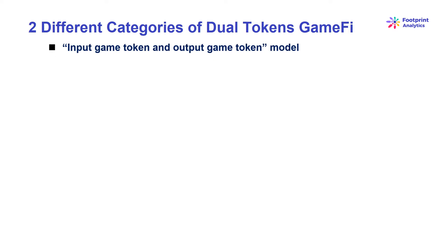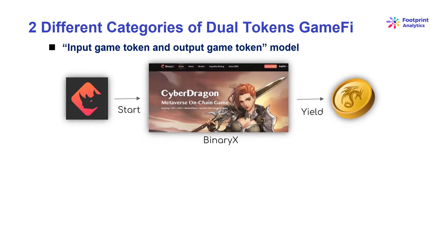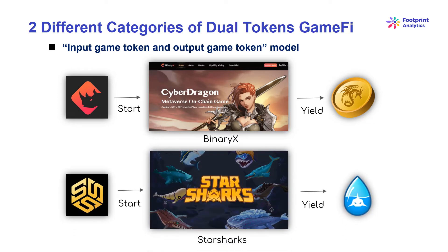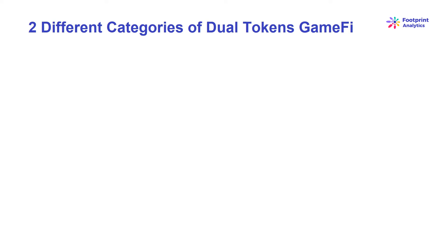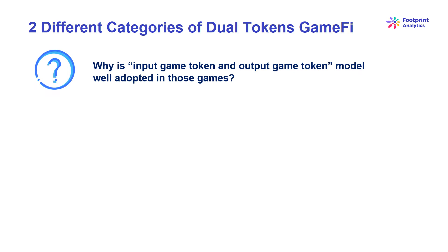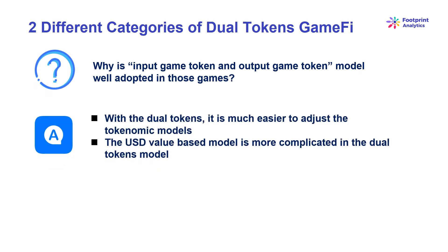Most newly released dual token game fi projects adopt the model of the input game token and output game token model. For example, Binarix players use governance tokens to start the game and yield utility tokens as returns, while Starsharks players start and yield utility tokens in the game. We know that the cost and returns are both highly correlated to the token price in this model. But why is it well adopted in those games? With dual tokens, it is much easier to adjust the tokenomic models without centralized adjustment compared to the USD value-based model. The USD value-based model requires an oracle to specify the number of corresponding tokens, making it more complicated than the dual tokens model.